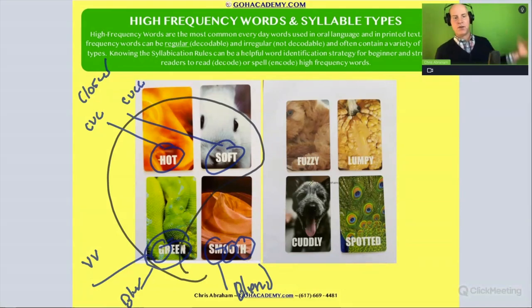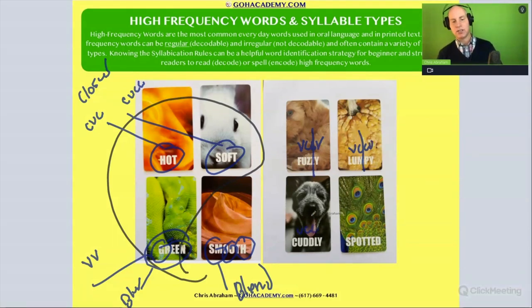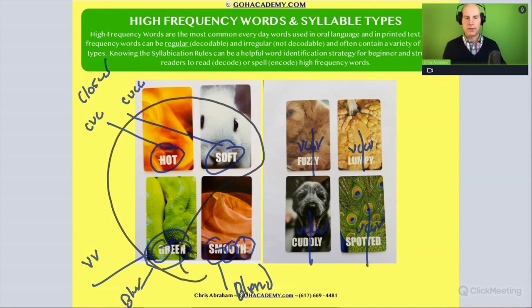Fuzzy follows the vowel-consonant-consonant-vowel pattern, also known as the rabbit rule. The same applies to the multi-syllable words cuddly and spotted — both follow the vowel-consonant-consonant-vowel pattern. These rules are present in even these basic everyday words.